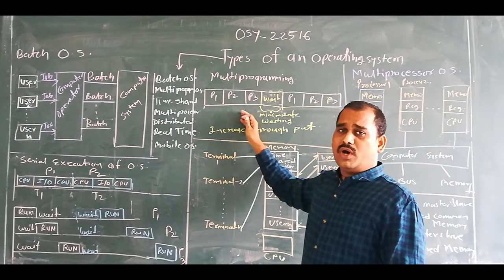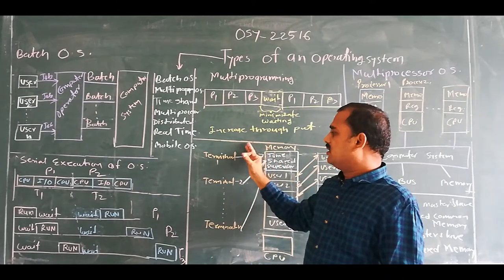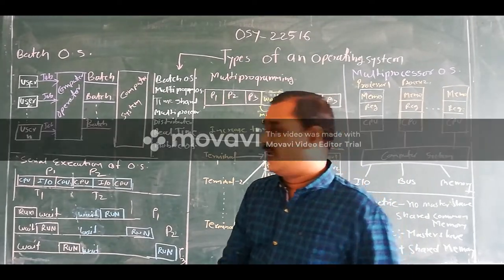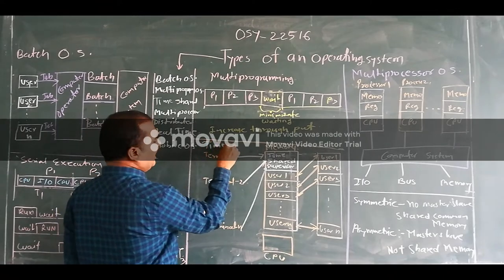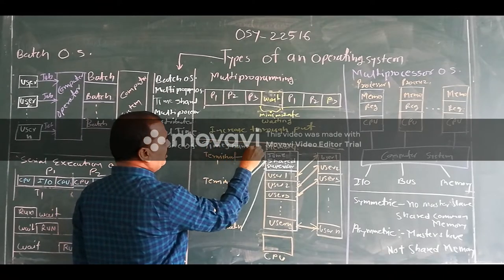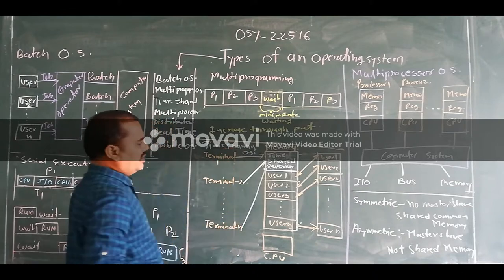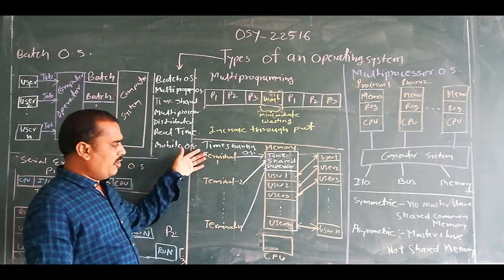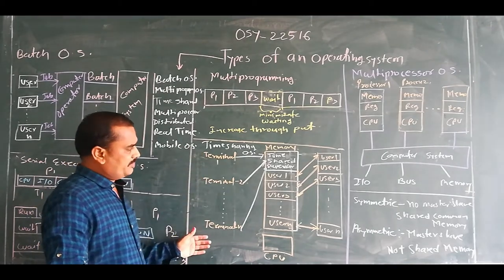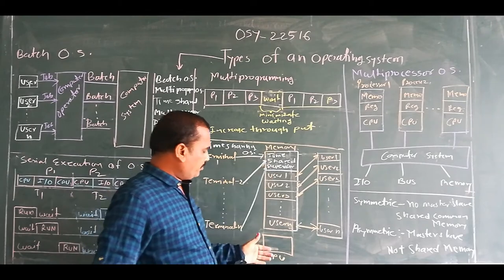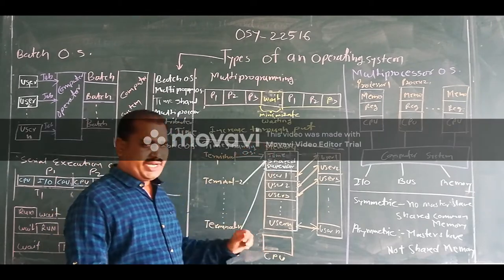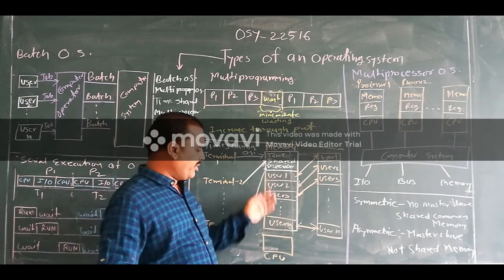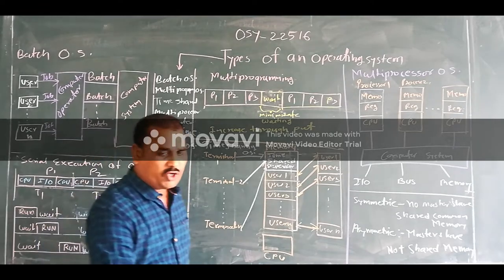So to overcome this limitation, we arrive at the next type of operating system, that is a timesharing operating system. In the timesharing operating system, there are a number of terminals or users which share a common memory and a common CPU for executing their jobs.